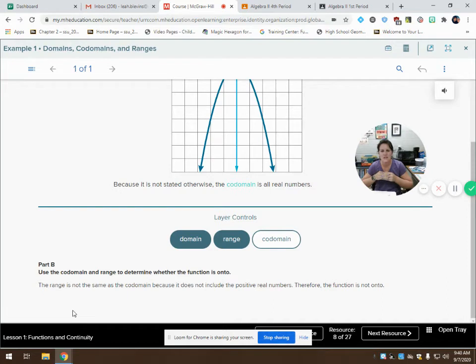The range is not the same as the codomain. My range was everything less than or equal to zero. The codomain is all real numbers. That's not the same. That's not the same thing. Mine is everything less than zero. That's my actual range.